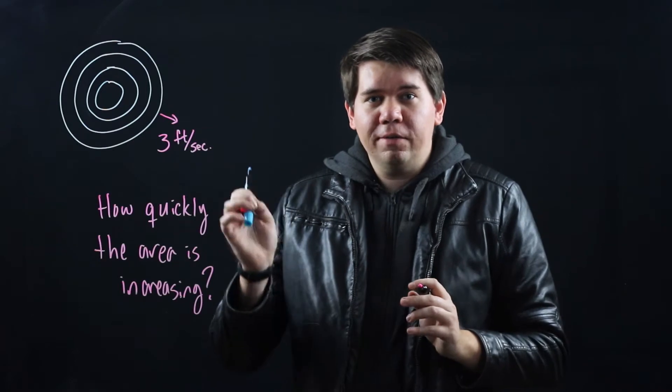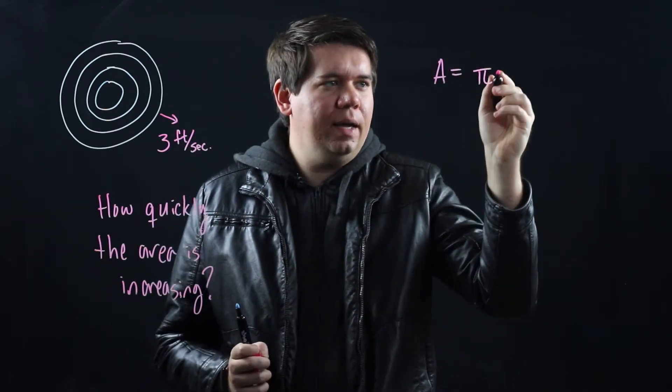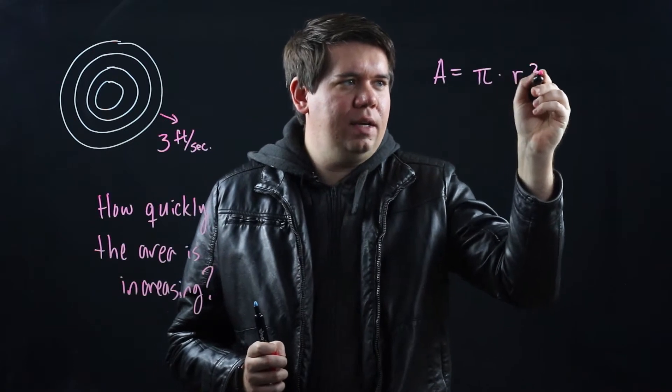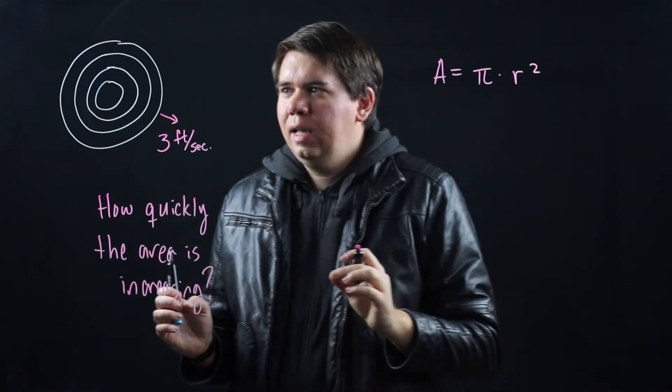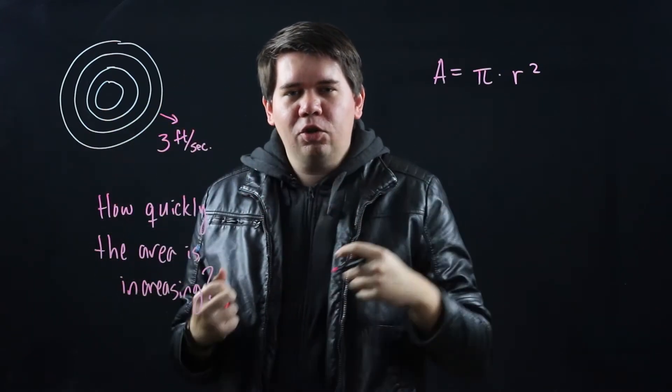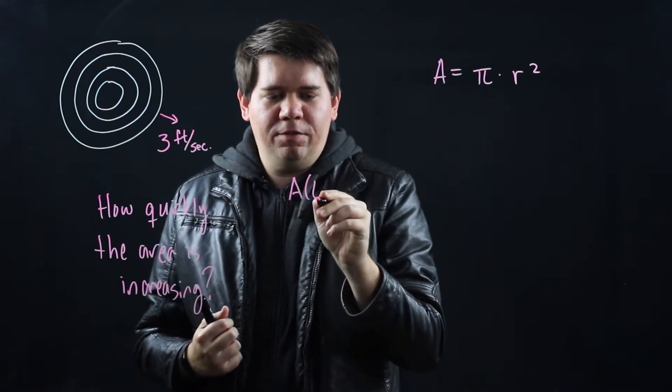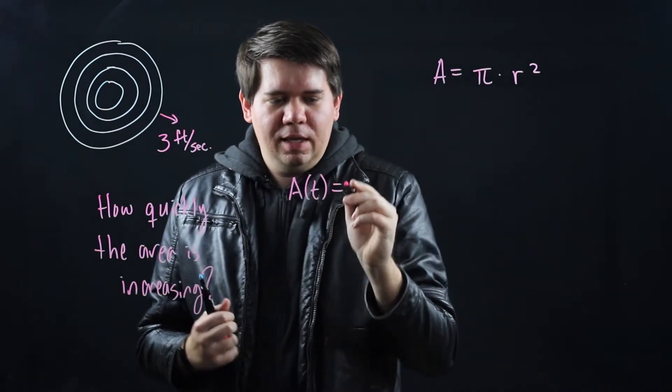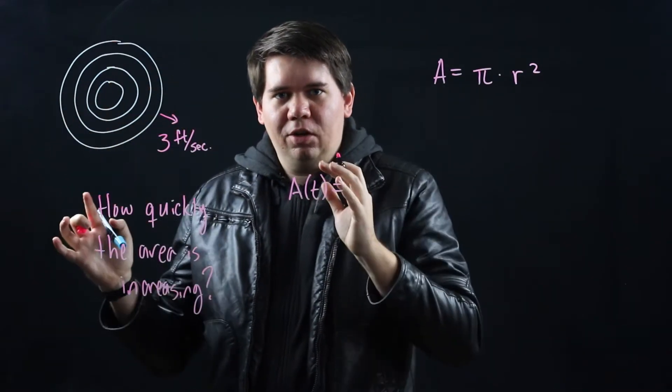We know that the area of a circle is given by π times the radius squared. Although in this case it's not just one fixed circle, the circle is expanding. So we should think that secretly the area is actually some function of time. That over time this area is getting larger and larger and larger.